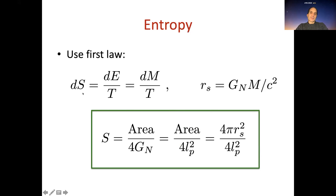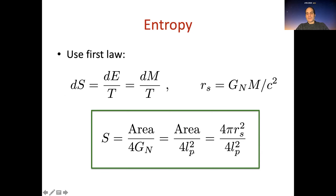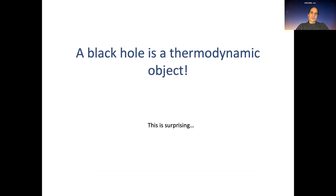Once we have a formula for the temperature and a formula for the mass of the black hole, we can apply the first law of thermodynamics to define an entropy. By integrating this formula, we get a very simple formula: the entropy of the black hole is the area of the horizon divided by 4G_Newton — or in natural units, the area in Planck units. The main lesson of these developments is that the black hole is a thermodynamic object, which is very surprising.